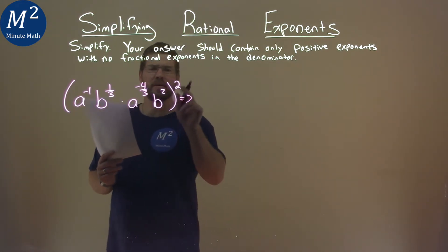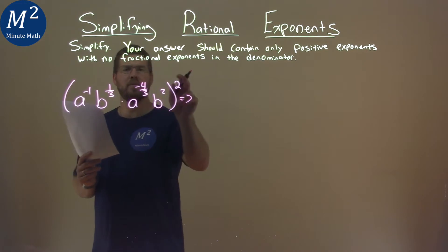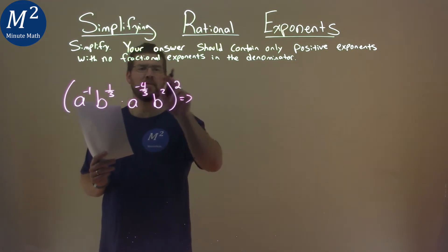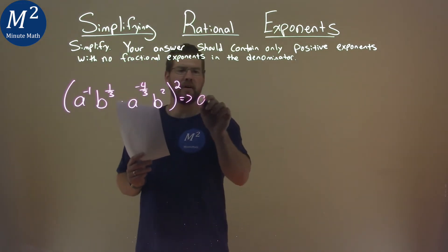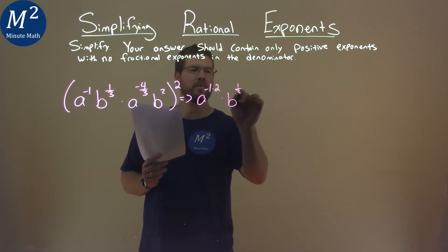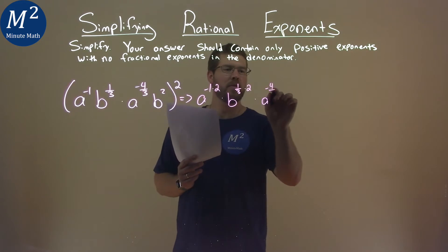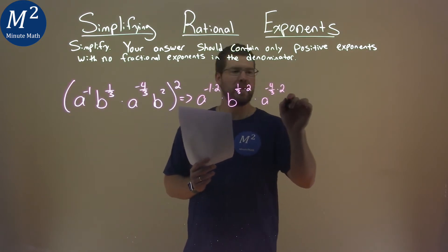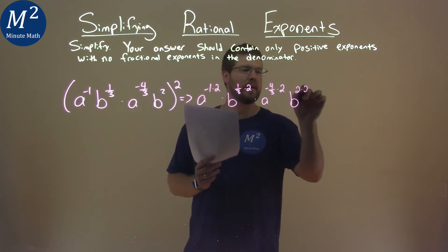Well, first thing I'm going to do here is distribute the 2nd power, really being multiplied to each one of the exponents inside here. So we have a to the negative 1 times 2, times b to the 1/3 times 2, times a to the negative 4/3 times 2, and then we have b to the 2nd power times 2.